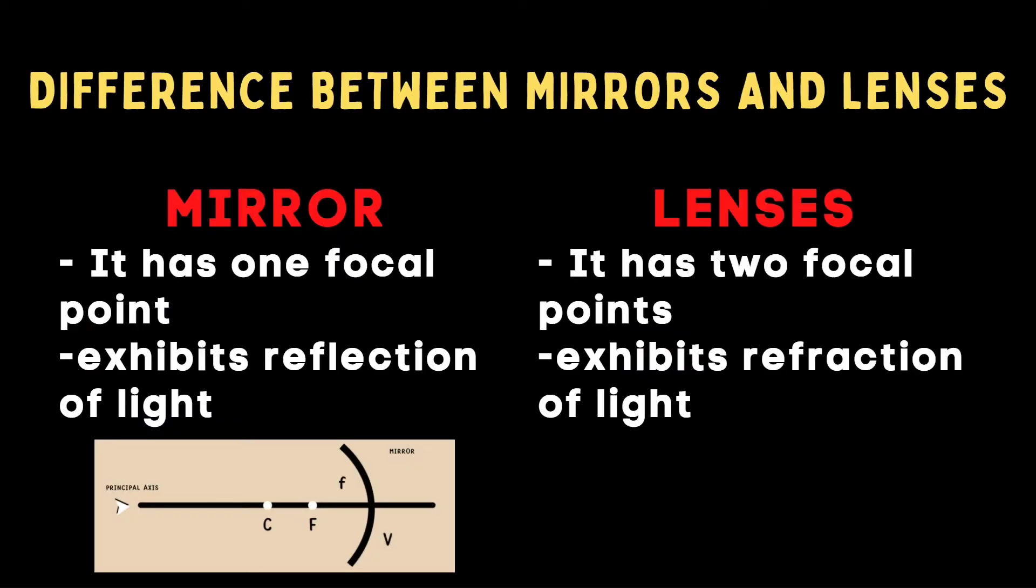What are the differences between mirrors and lenses? Mirror has one focal point, while lenses have two focal points. Mirror exhibits reflection of light, while lenses exhibit refraction of light.